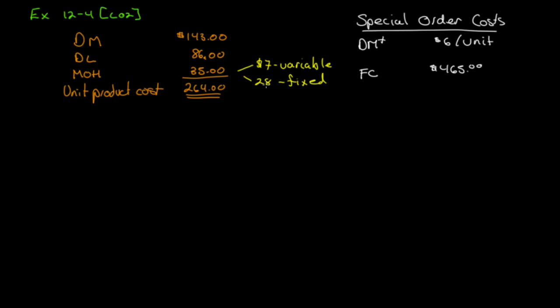The customer wants special filigree applied to the bangles. The filigree would require additional materials costing $6 per bangle and acquisition of a special tool costing $465 that would have no other use once the special order is completed. This order would have no effect on the company's regular sales, and the order could be filled using existing capacity without affecting any other order. The special price offered is $349.95 per bangle.